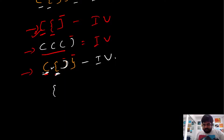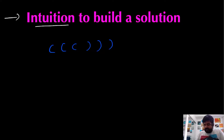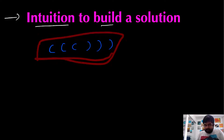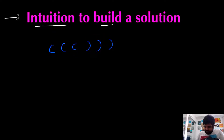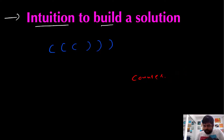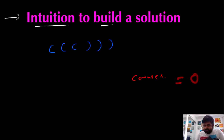Let's see what would be the potential solution, starting from the very simple example to build intuition. Suppose we are given all brackets of the same kind — some opening and some closing. We can create a counter: whenever we identify an opening bracket, we increment the counter; whenever we encounter a closing bracket, we decrement it. At the end, if the counter equals zero, the same number of opening and closing brackets are present and the string is valid. Otherwise it is invalid.